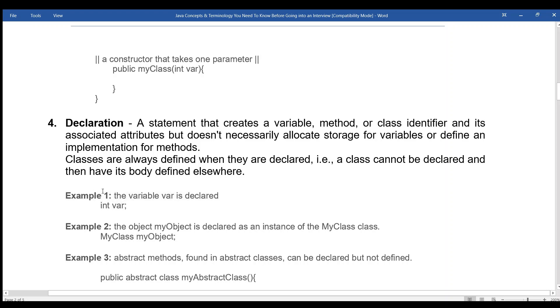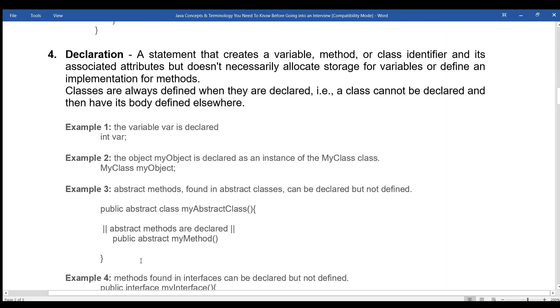Example 1: the variable var is declared: int var. Example 2: the object myObject is declared as an instance of the MyClass class: MyClass myObject. Example 3: abstract methods found in abstract classes can be declared but not defined. public abstract class myAbstractClass. Abstract methods are declared: public abstract myMethod.